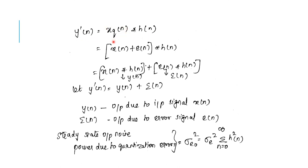Since XQ(n) equals X(n) plus E(n), we have Y'(n) equals (X(n) plus E(n)) convolved with H(n), which expands to X(n)*H(n) plus E(n)*H(n). So Y'(n) equals Y(n) plus epsilon(n), where Y(n) is the output due to input signal X(n) and epsilon(n) is the output due to the error signal E(n).